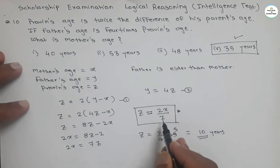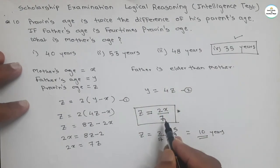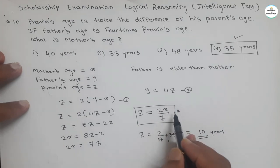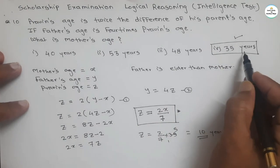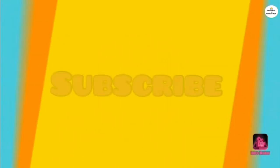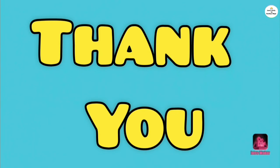Very clearly, the key assumptions here are that father is elder than mother, and age must be a whole number — only then can we say 35 is the correct answer. This is all for this video. We will meet again in the next video. Do learn, do enjoy. Thank you, bye bye.